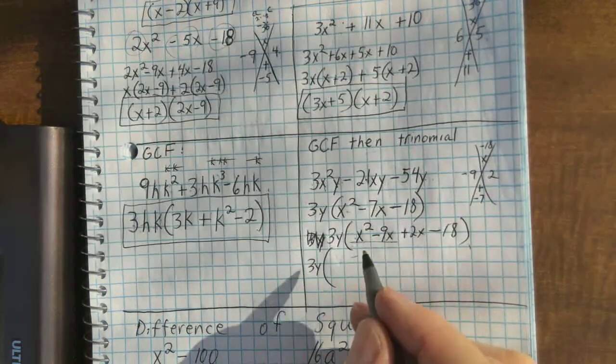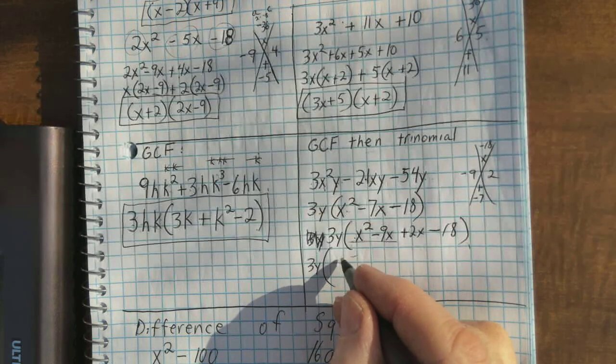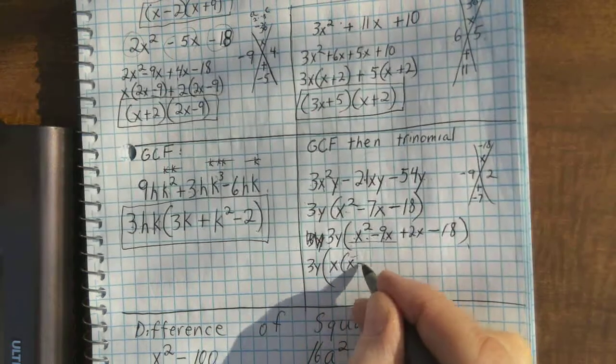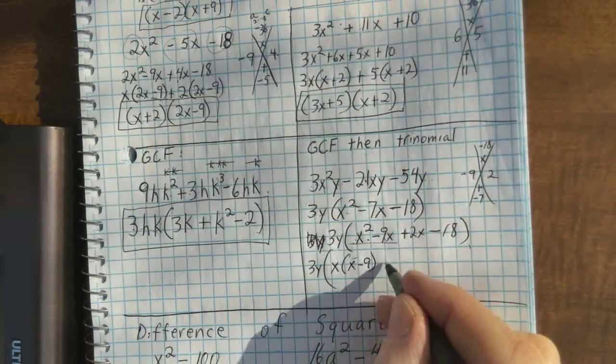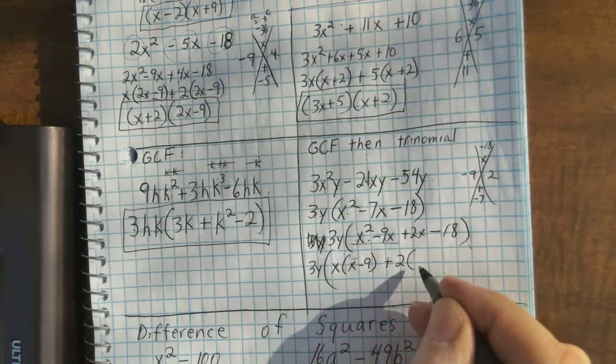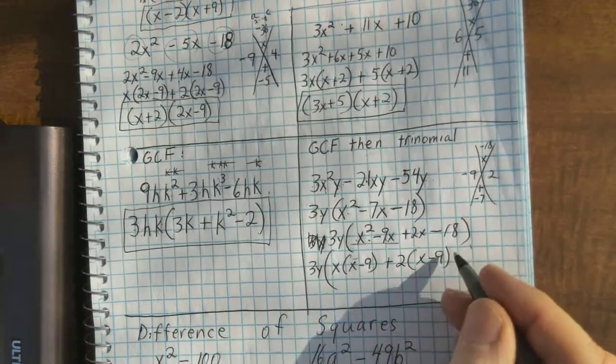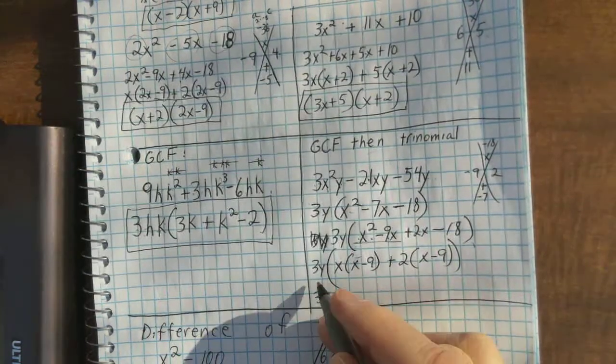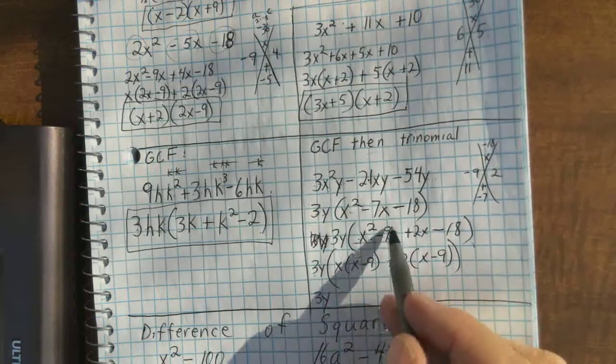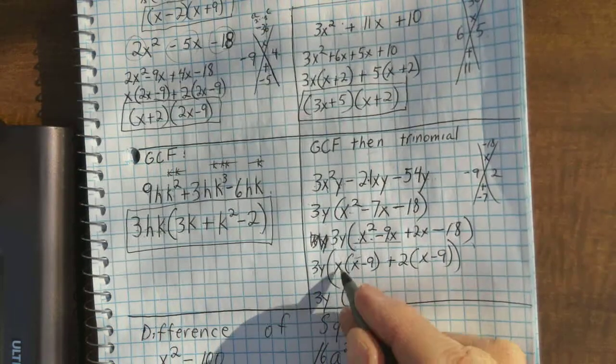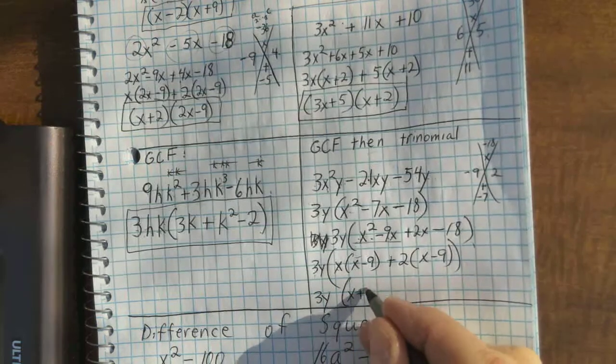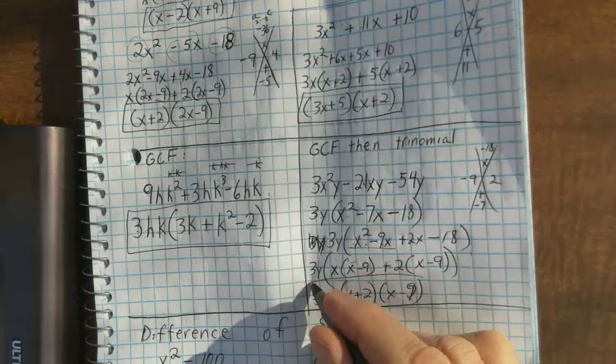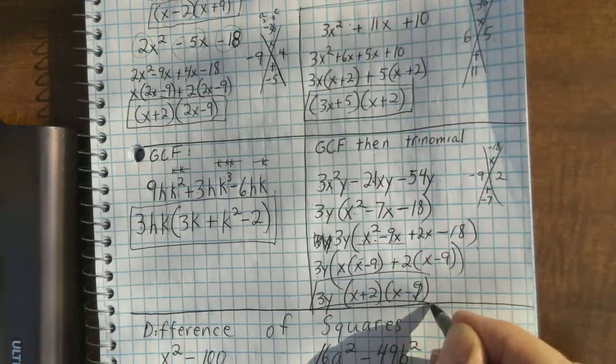Let's see. x squared minus 9x. x goes into both of those. There's x and then there's x minus 9 here. 2x and 18. 2 goes into both those. And that's 2 times x minus 9 here. And my final answer. The 3y is, I've just kept on the outside all along while we've worked on factoring this part. And x plus 2 here. And then the common, the x minus 9 here. So, here is the factoring that happens there.